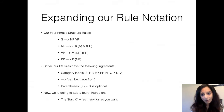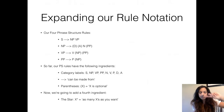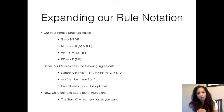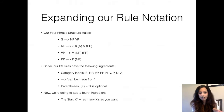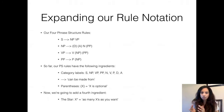So now you have an intuitive understanding of the four different phrase structure rules: S goes to NP VP; NP goes to an optional D, optional A, obligatory N, and optional PP; VP goes to an obligatory V, optional NP, and optional PP; and PP goes to P and an optional NP.